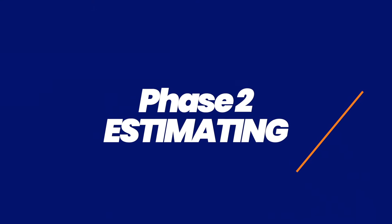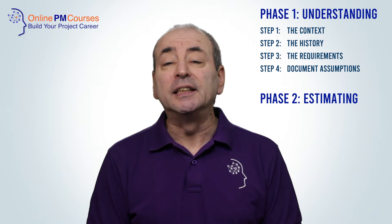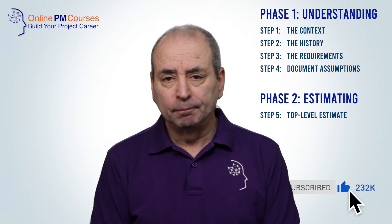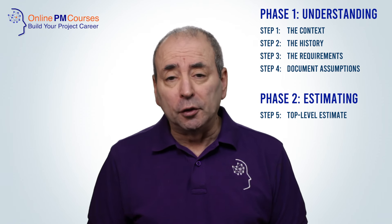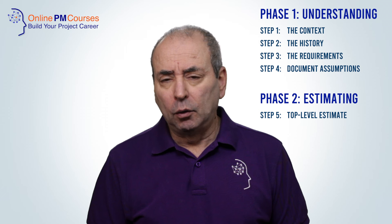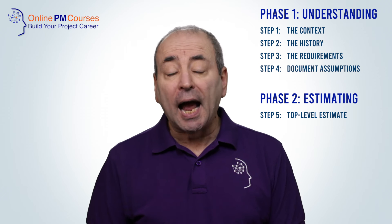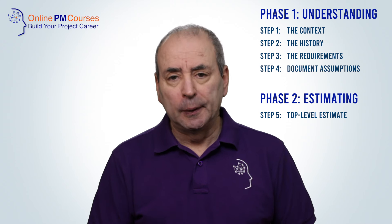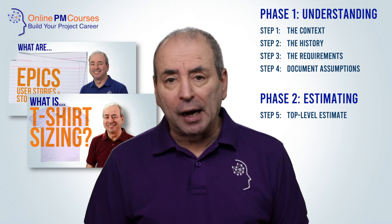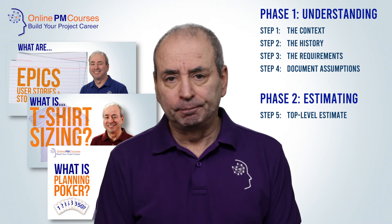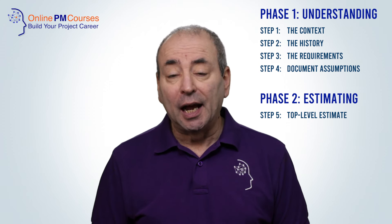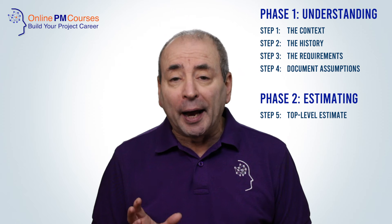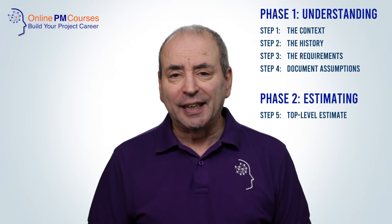Phase two: estimating. Step five is to make an initial top-level estimate. Start with an initial high-level estimate. For this, you can use order of magnitude estimating, top-down estimating, parametric estimating, or simply expert judgment. Agile estimating techniques work well here too — story pointing, t-shirt or bucket sizes, or even planning poker. What matters is bringing your experience to bear and choosing a simple process that gives you a rough idea of the scale of the schedule you're going to need.